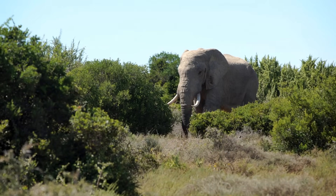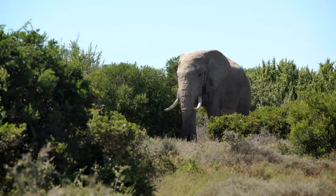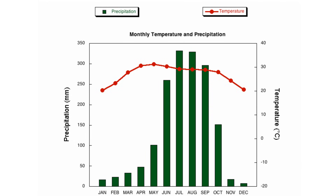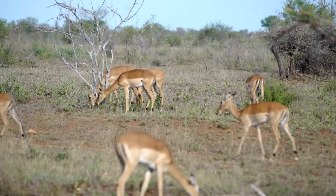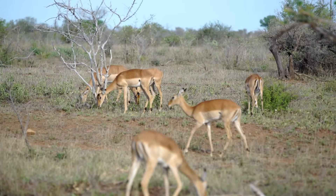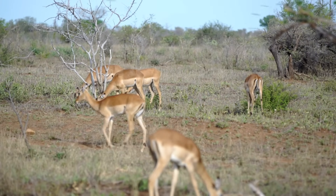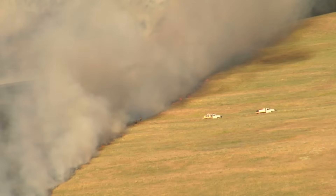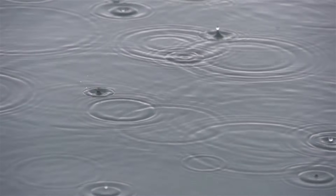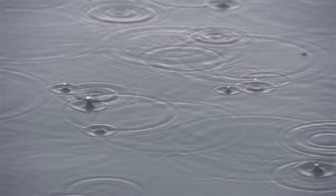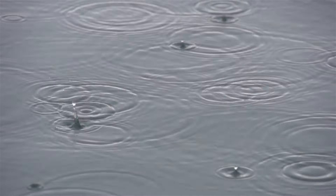Savannas have warm temperatures year round. There are actually two very different seasons in a savanna: a very long dry season in the winter and a very wet season in the summer. In the dry season a savanna may receive only 4 inches of rain. The dry season is between December and February and has occasional fires.